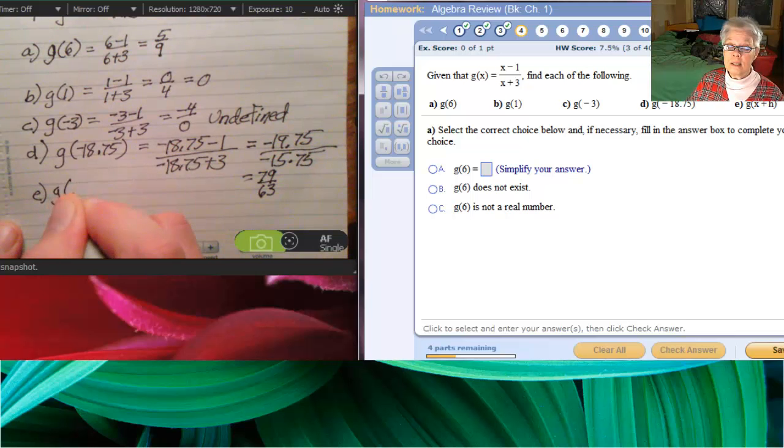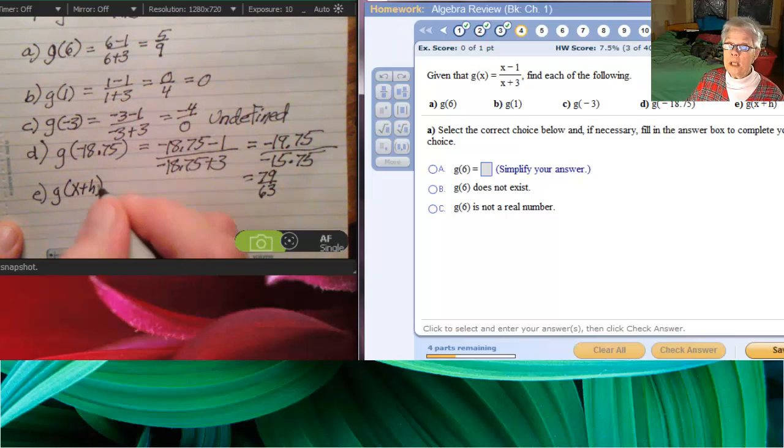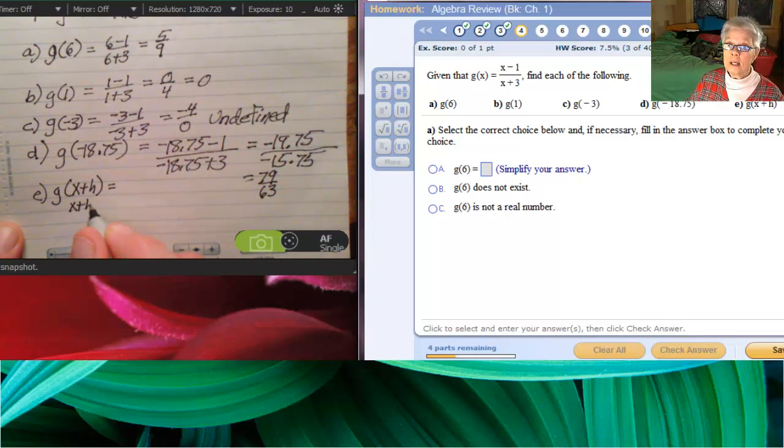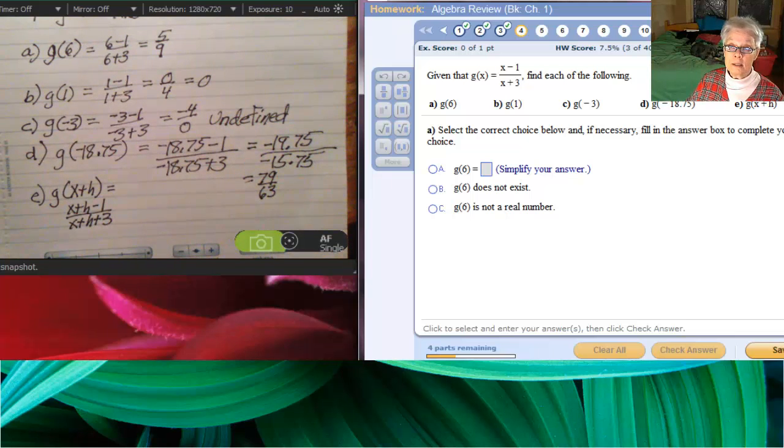Now, e is an expression. We're going to substitute x plus h for every x. That will give us x plus h minus 1 over x plus h plus 3. And we're done calculating, so let's start entering our answers in the answer boxes.